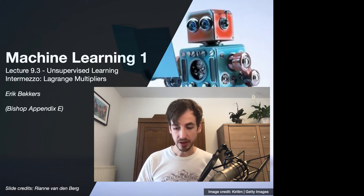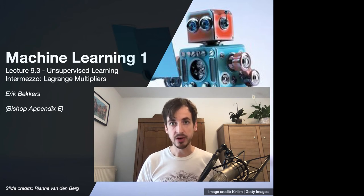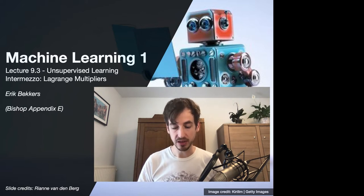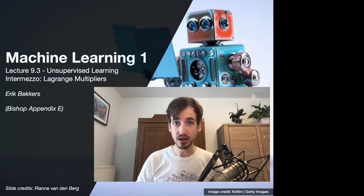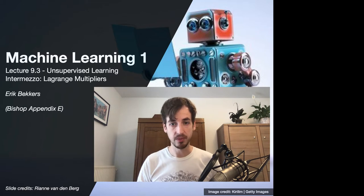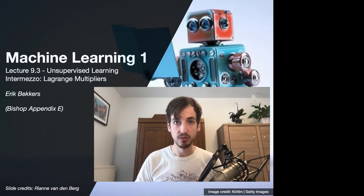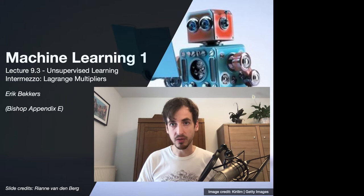Before proceeding to Gaussian mixture models, I'd like to briefly go over the method of Lagrange multipliers for solving constraint optimization problems. In the upcoming video we will be optimizing Gaussian mixture models, and this involves a constraint optimization step. Later on in this course we will again encounter constraint optimization problems solved by the method of Lagrange multipliers, so it's worthwhile to take a moment and go over this method.